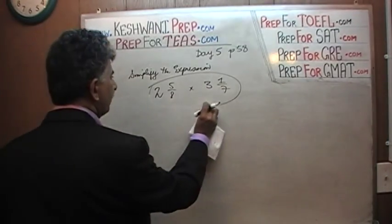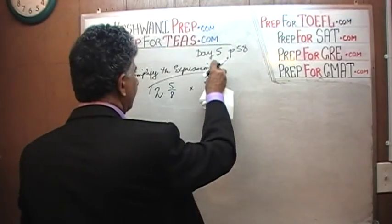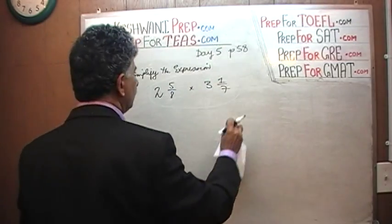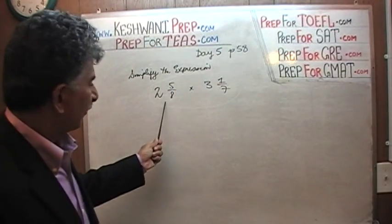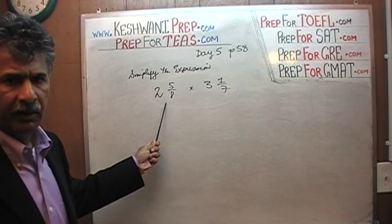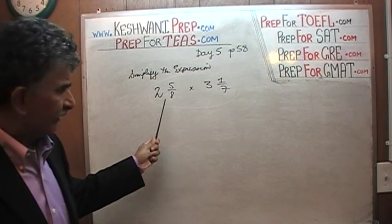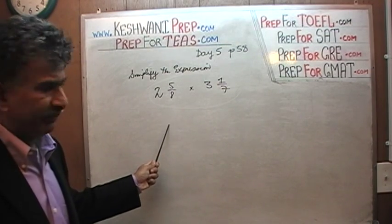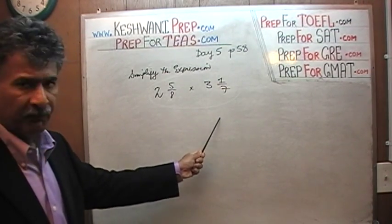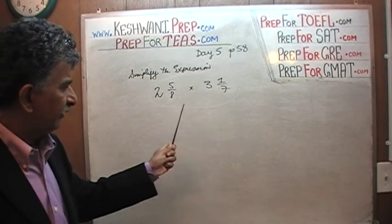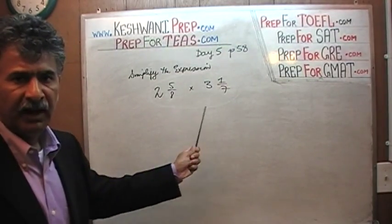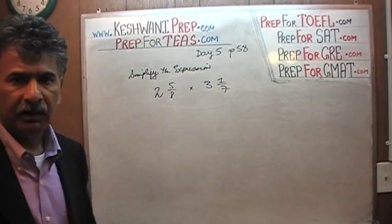Our job is to multiply these two quantities. The thing to do here first is to express each mixed fraction as an improper fraction. Express 2 and 5/8 as an improper fraction, and express 3 and 1/7 as an improper fraction. Once we have a fraction here and a fraction there, we can simply multiply the tops and multiply the bottoms and we are done.